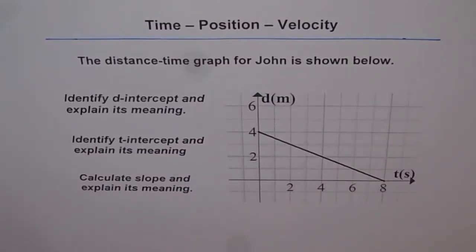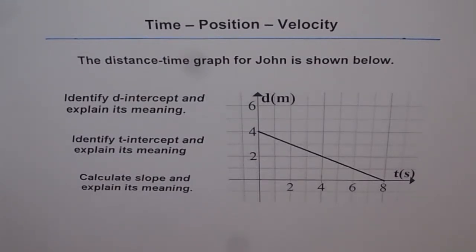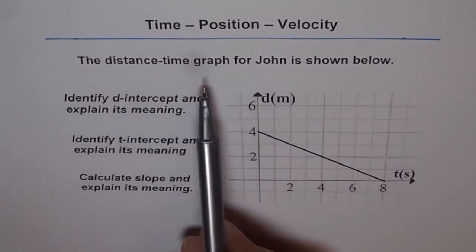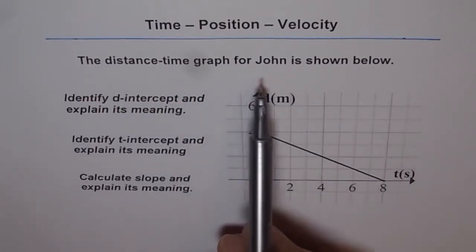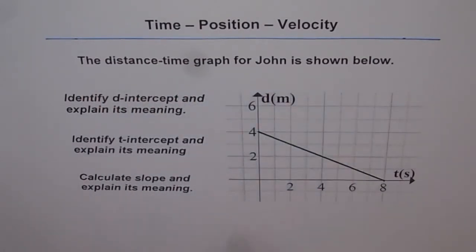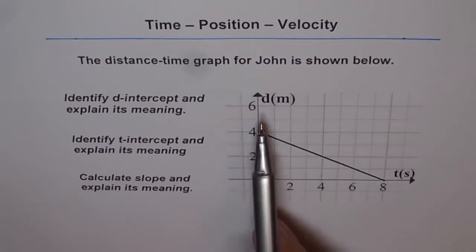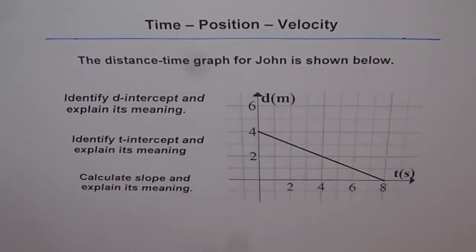Time, position, velocity. Let's try to understand a few more concepts for time-position-velocity graphs. The distance-time graph for John is shown. That's the graph which shows distance and time for John, and you need to answer the questions here.